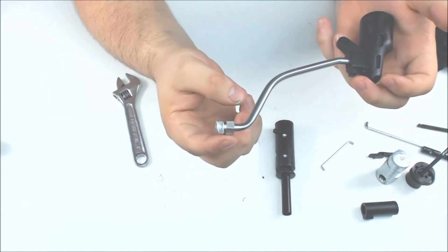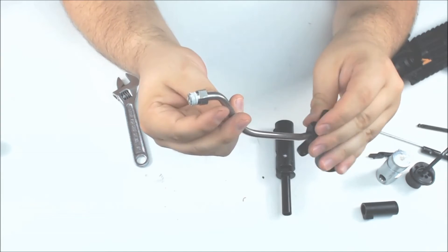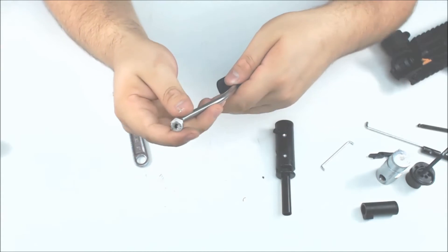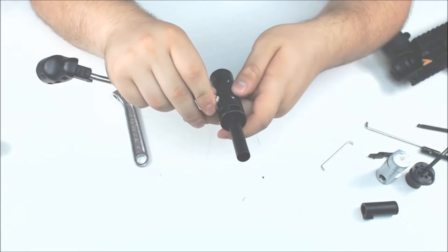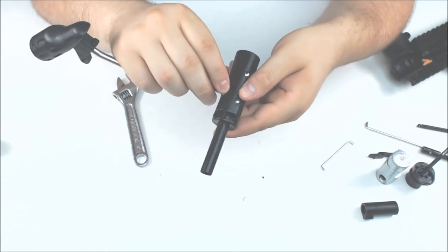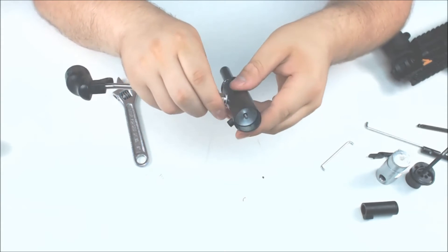And so there we have the air transfer tube with Teflon tape ready to be put into the valve in the power tube. So we're going to do that the same way that we got it out, just opposite.